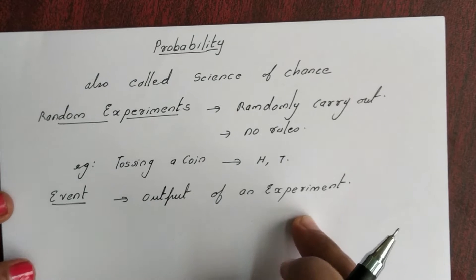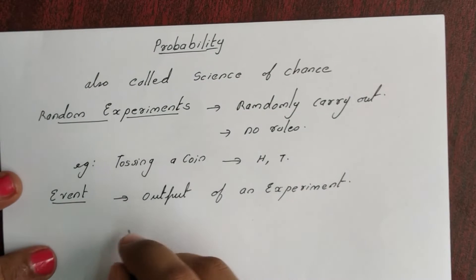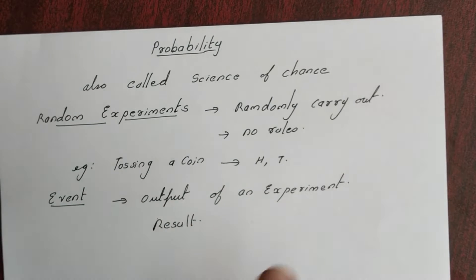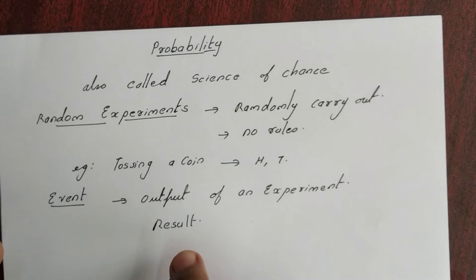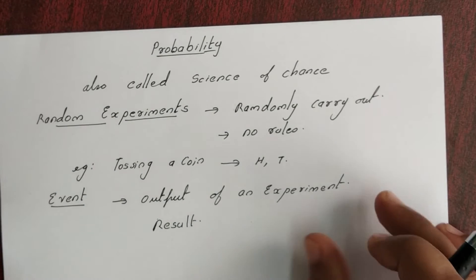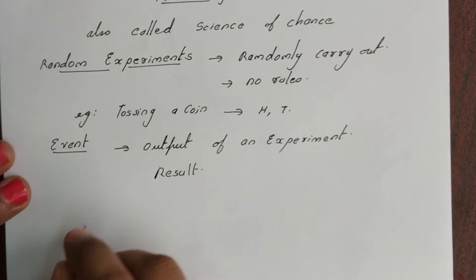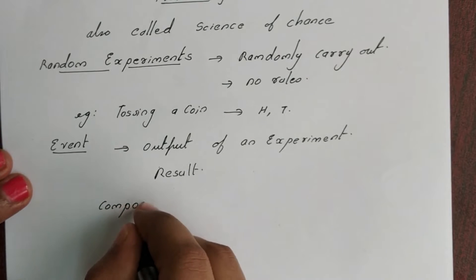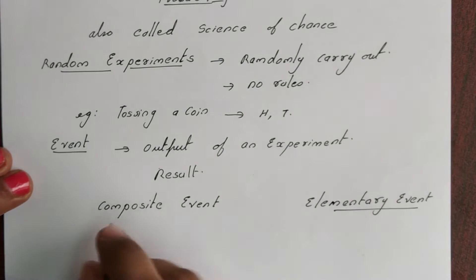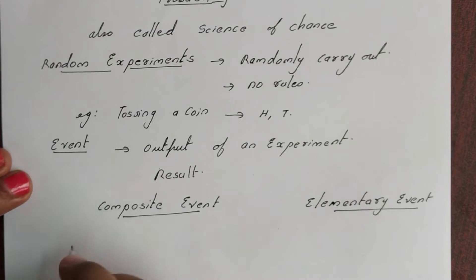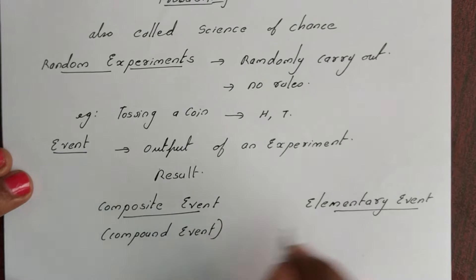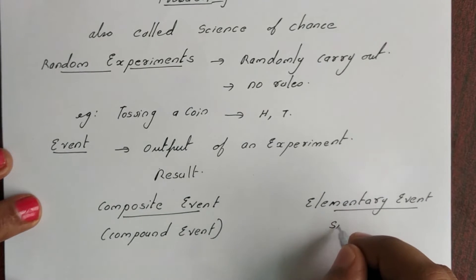The output of an experiment is called a result or output. The result of one experiment is called an event. There are two types of events: composite event and elementary event. A composite event is also called a compound event, and an elementary event is also called a simple event.